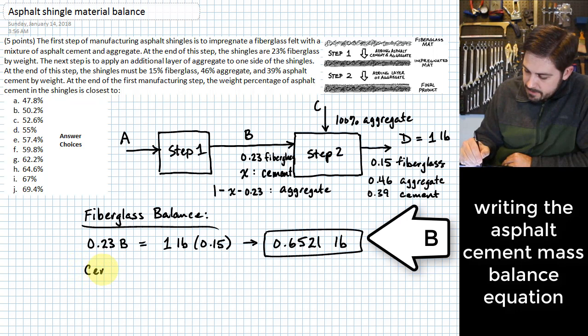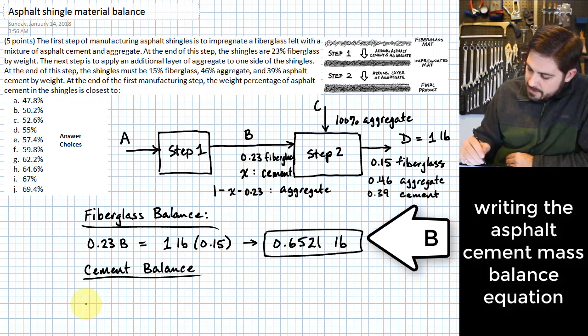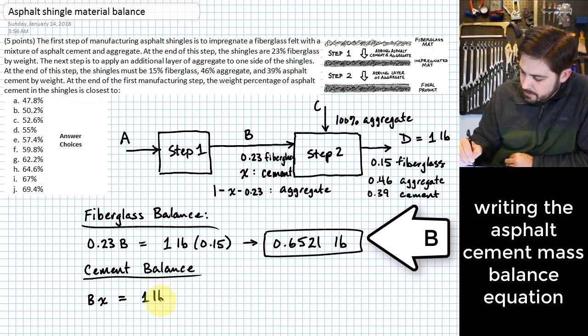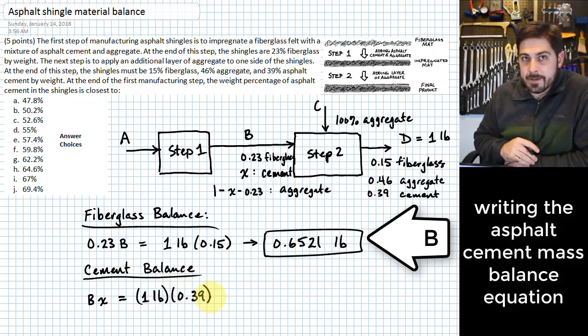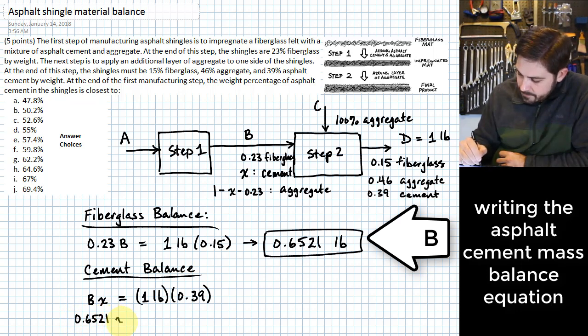The next thing we want to do is a cement balance. This is for that asphalt cement. And on that cement balance, you see that we will have B times X coming in for cement. Do we have anything coming in on C? We sure don't. So all we have there then is going to the last one, which is one pound times 0.39. Well, what we already solved here for B, so we should be able to change this up and say that this is just 0.6521 times X is equal to 0.39 pounds.